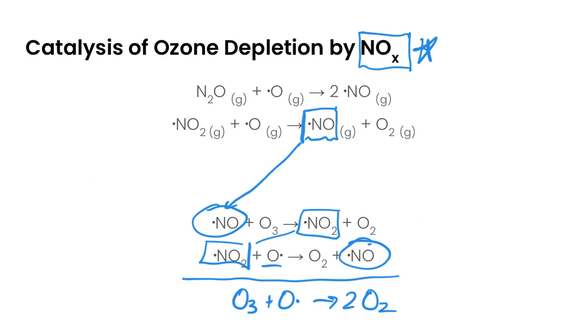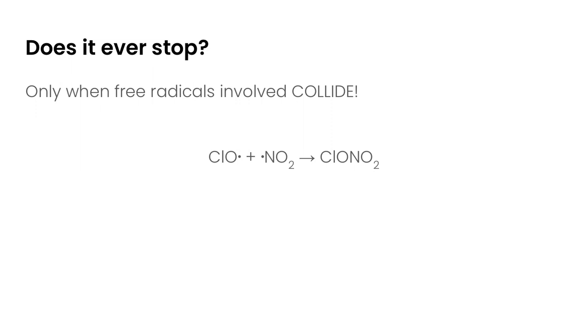So this kind of begs the question, does it ever stop? Well, the only way to get any of these reactions to stop is to have two free radicals randomly collide into one another in order to get rid of the free radicals. So you could, for example, have a free radical from the CFCs and a free radical from the nitrogen oxides colliding together to form some really kind of funky different kinds of compounds. But that's the only way that this reaction stops is when free radicals collide with one another.